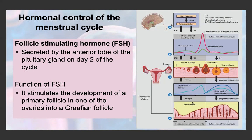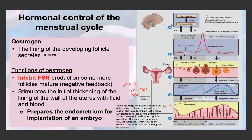Estrogen is secreted by the lining of the developing follicles. Before ovulation, the developing follicle secretes estrogen, which inhibits FSH production so no more follicles mature. We can see that estrogen peaks around this time and FSH decreases. FSH does increase again when LH increases to promote ovulation, but the key relationship is: high estrogen leads to low FSH via negative feedback, because we don't want another follicle to be stimulated.